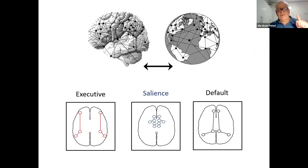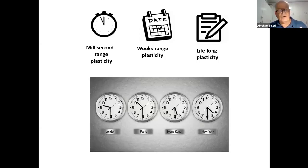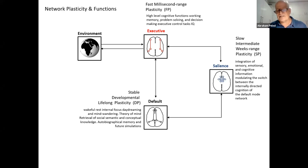We have executive, salience, and default mode networks. The executive network acts quickly — decision-making, working memory. The salience network relates to adaptability and Bayesian dynamics. The default mode network is active at rest and probably represents all internal representations and the brain's model of the environment. The brain functions on timescales ranging from milliseconds to lifelong plasticity. The executive network interacts with the environment directly; the default mode network represents the environment; there is a mismatch or match between representations; and the salience network handles adaptability.